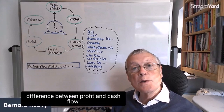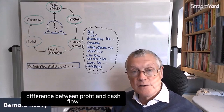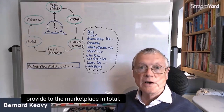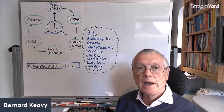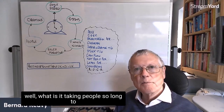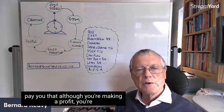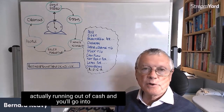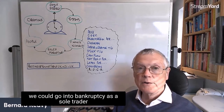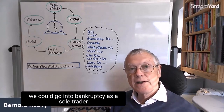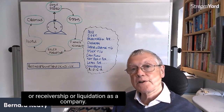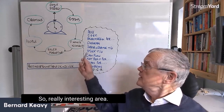And you need to know the difference between profit and cash flow. Profit is where you're selling things for more than they're costing you to provide to the marketplace in total. But cash flow is saying, well, is it taking people so long to pay you that although you're making a profit, you're actually running out of cash and could go into bankruptcy as a sole trader, or receivership or liquidation as a company. So really interesting area.